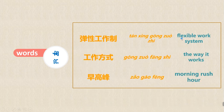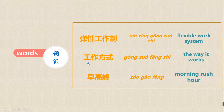Another group of words. 弹性工作制 means 'flexible work system'; 工作方式 means 'the way it works'; 早高峰 means 'morning rush hour.' 弹性工作制。工作方式。早高峰。Great.